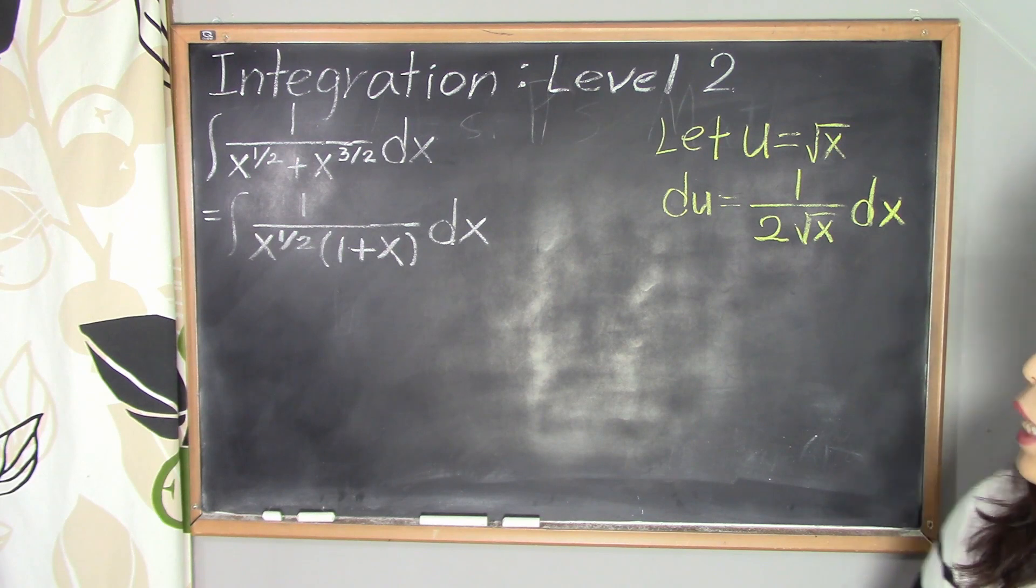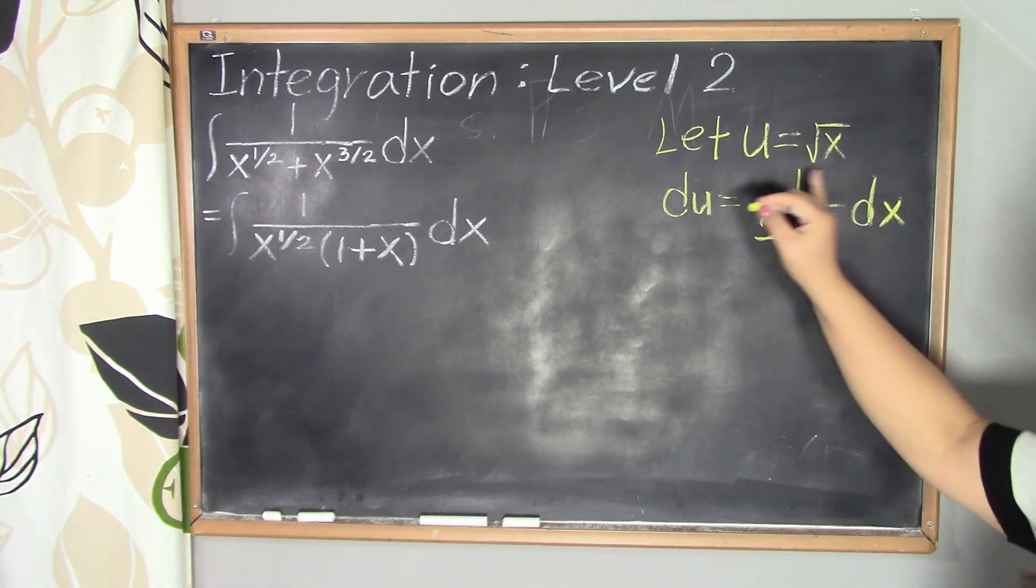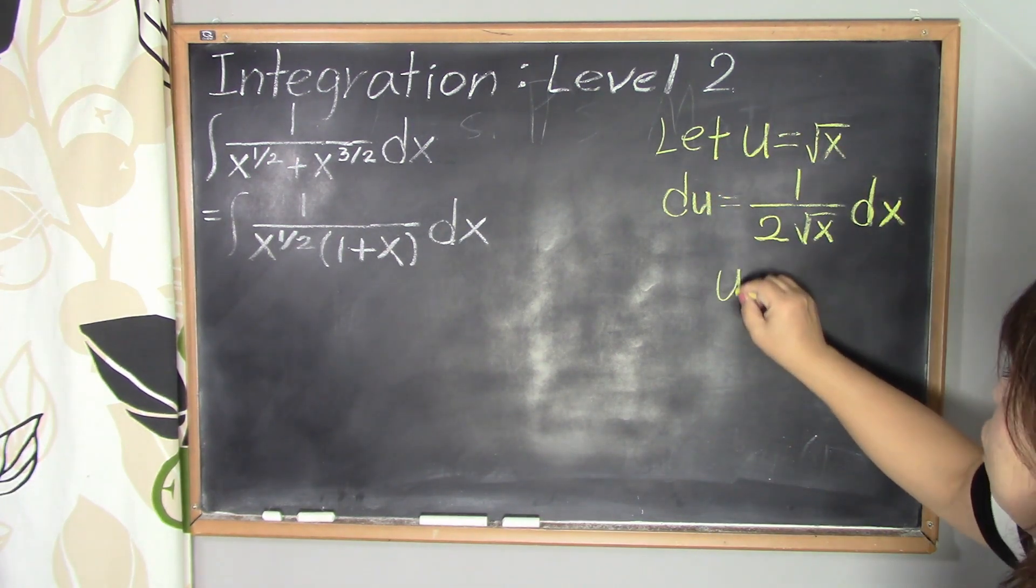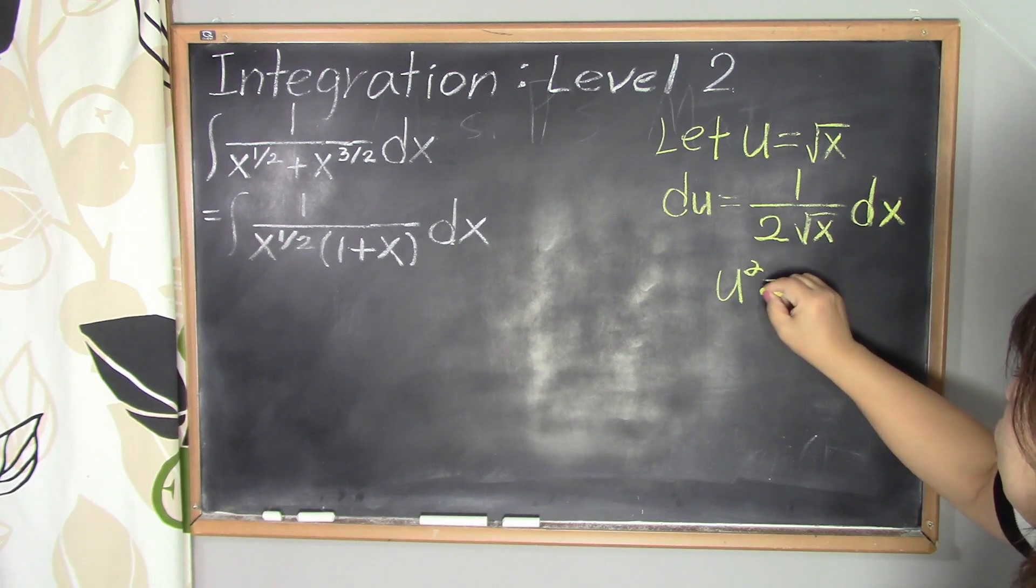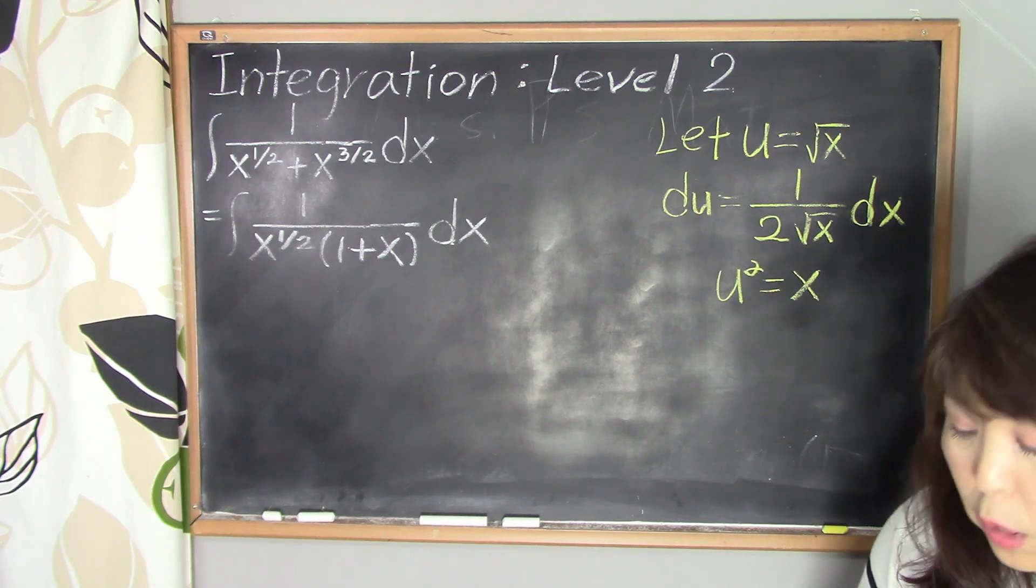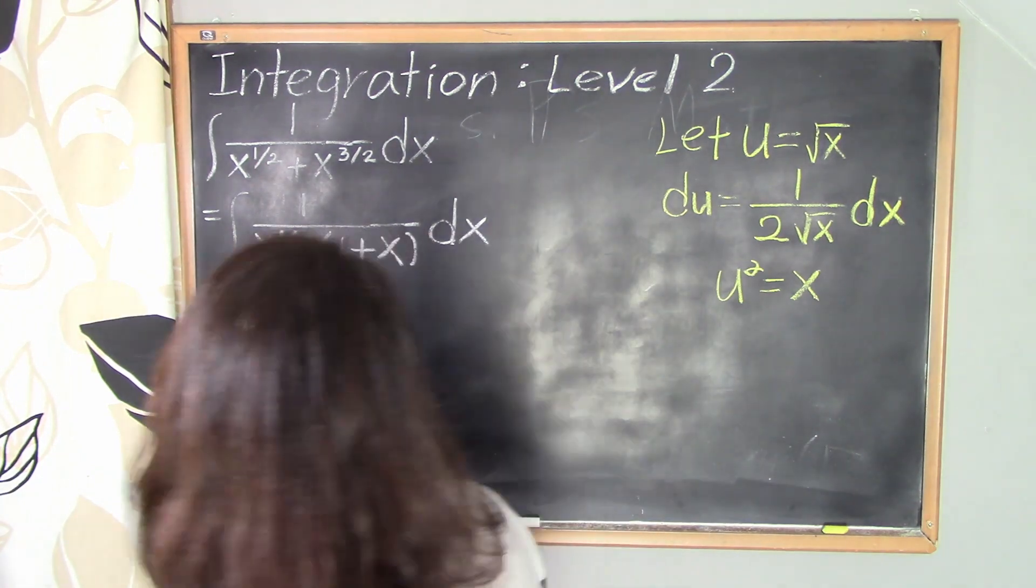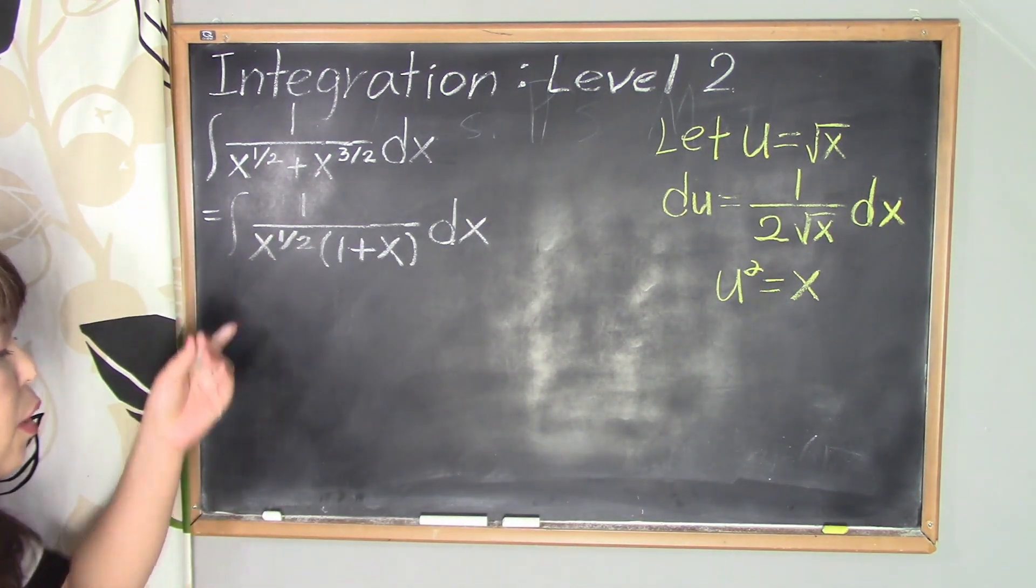And then next, we're going to square this equation. So that is u squared equals x. So this is the point. Now we're going to change everything over here.